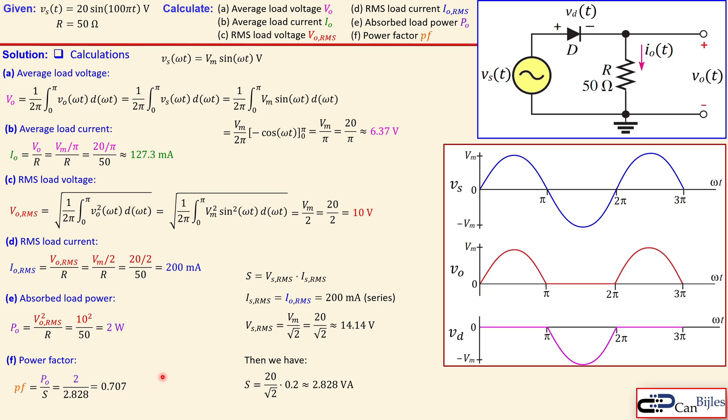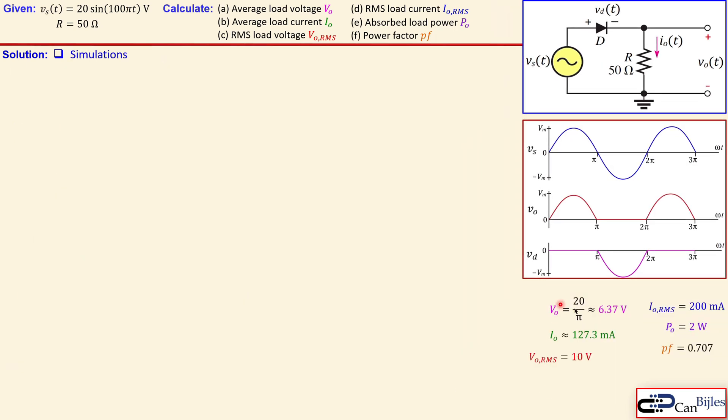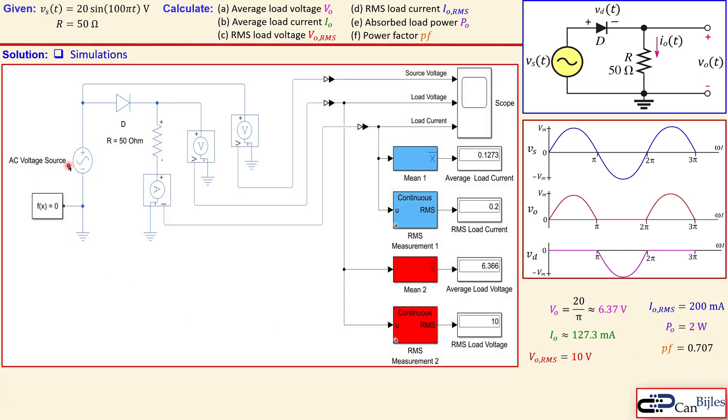Let's now collect the values we have calculated and look at the simulation we have done. This is the AC voltage source vs, and this is the diode which is considered to be ideal, close to ideal in the Simulink. And we have also our resistor of 50 ohms here. Here we measure the current, here we measure the voltage at this node, and we also measure the voltage at this node. All three go to the scope, so we will shortly also see the waveforms. And you also take here the mean value of the load current, also the RMS value. You can see the values here, and also from the load voltage we take the mean and the RMS value.